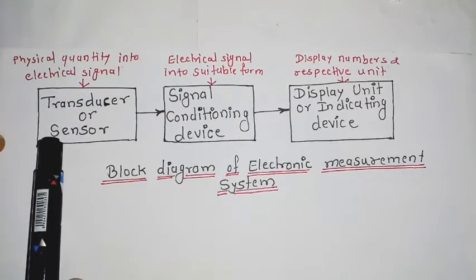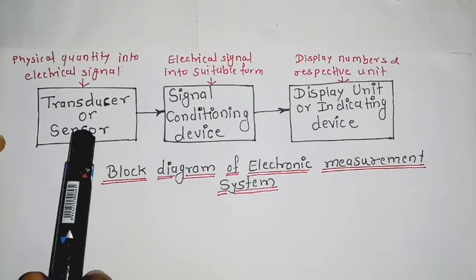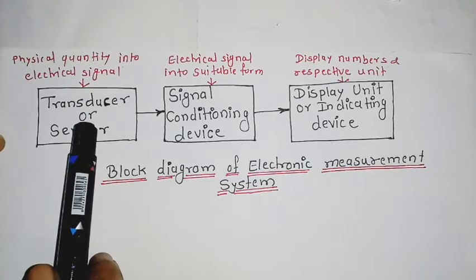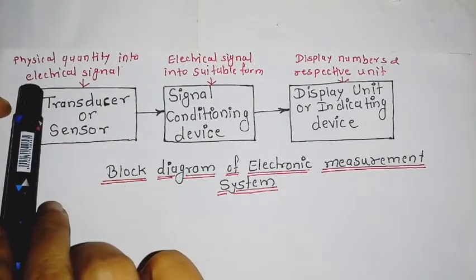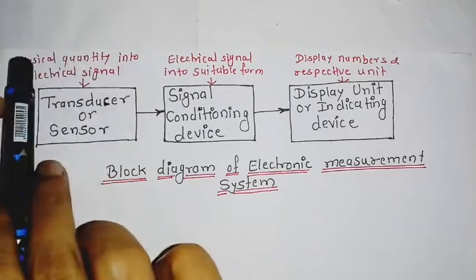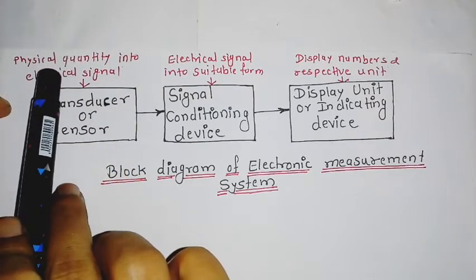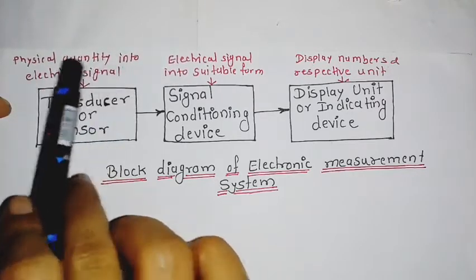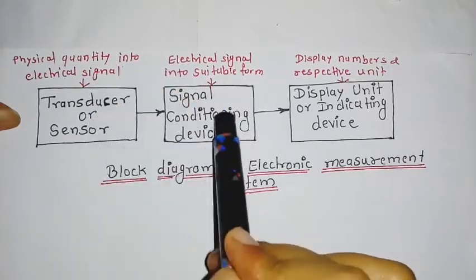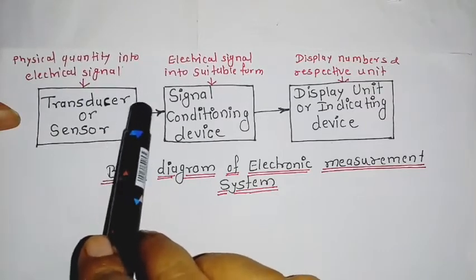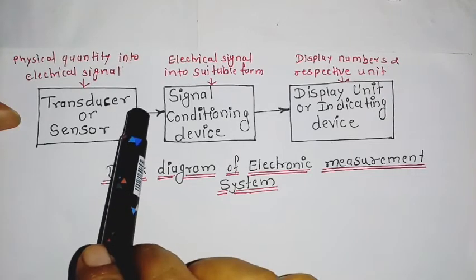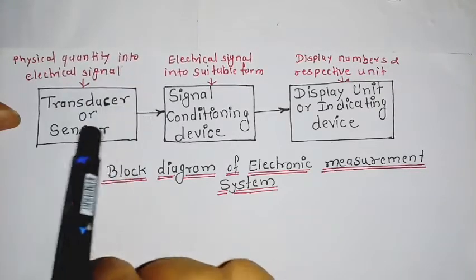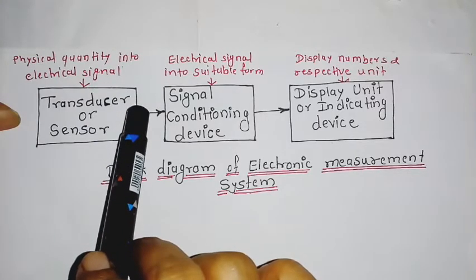The first block is the transducer or sensor. It is also known as a primary sensing or sensor element. It converts physical quantity into an electrical signal. The output of the transducer is electrical in the majority of cases.